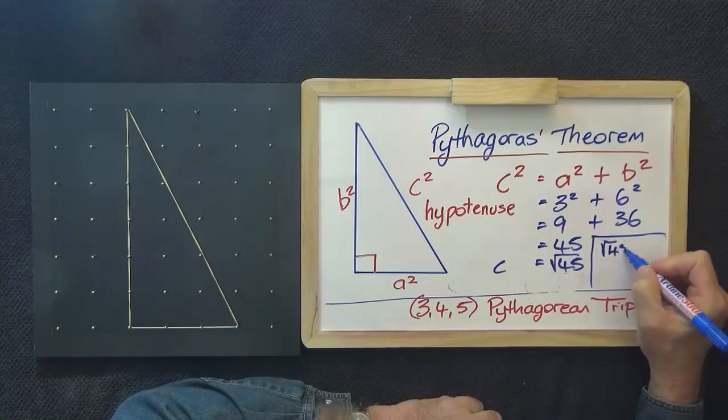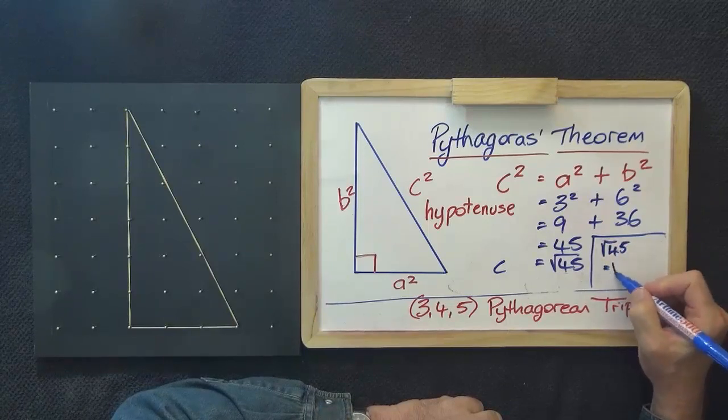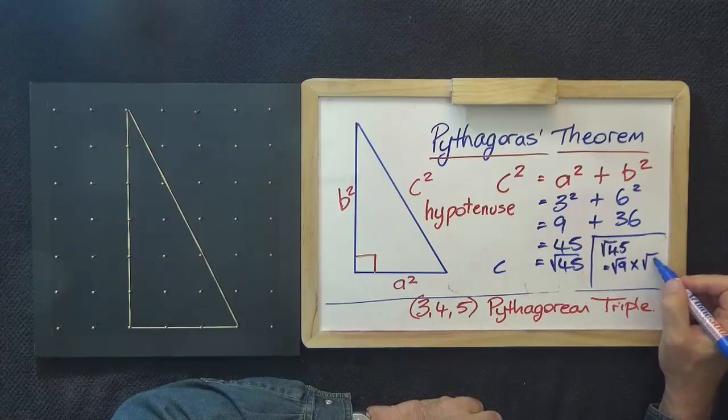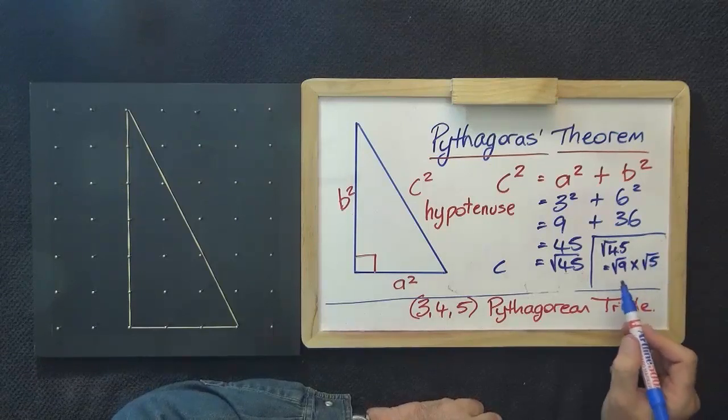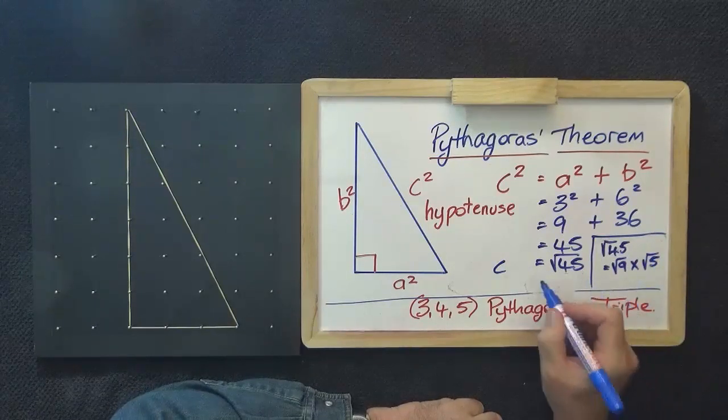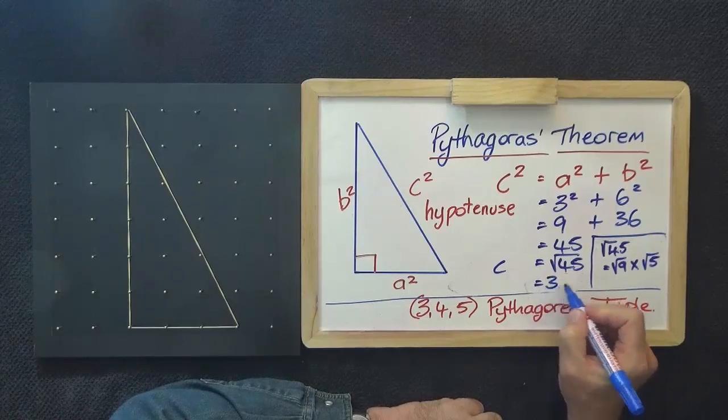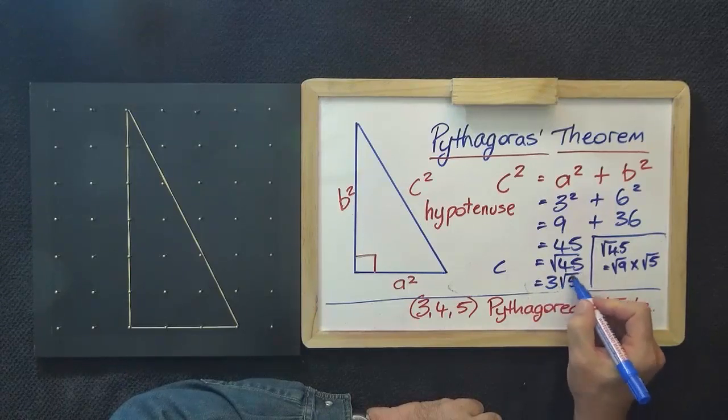Root 45 equals root 9 by root 5. So the answer here should be written as 3 root 5.